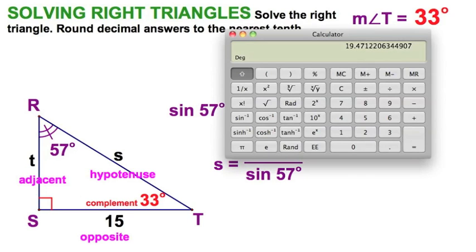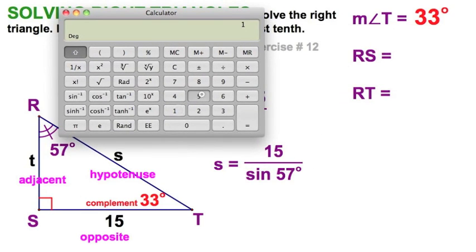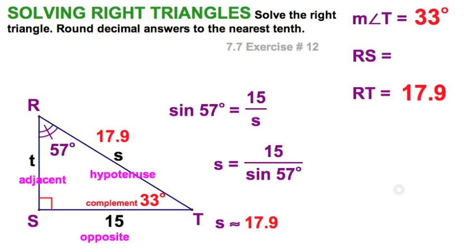Do I still have to show you on the calculator? We'll do it just for fun. Here we go. 15 divided by 57, we're in degrees. Make sure you hit the sine. That looks good. And there you go. 17.9 to the nearest tenth. And we put that down there. That's right.